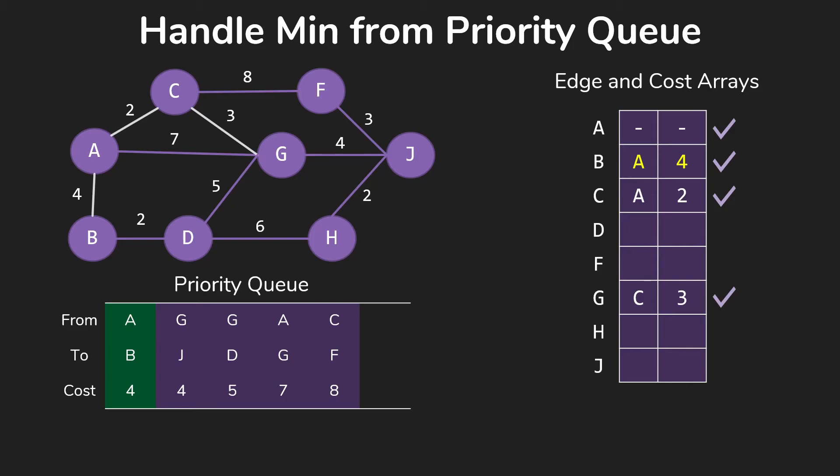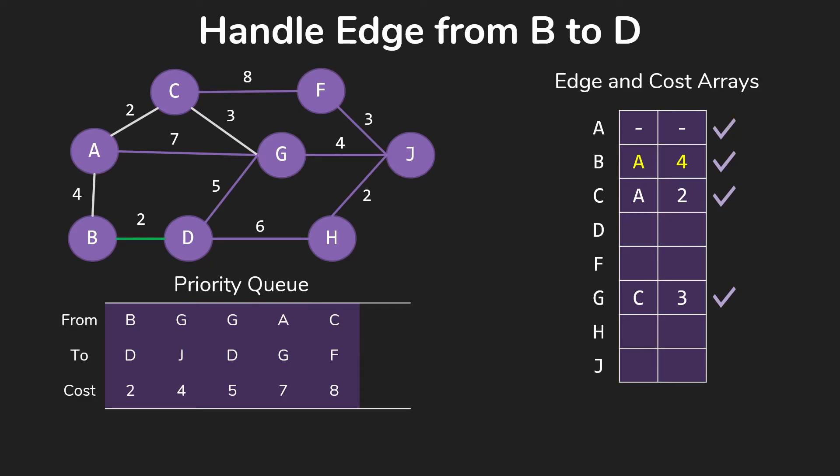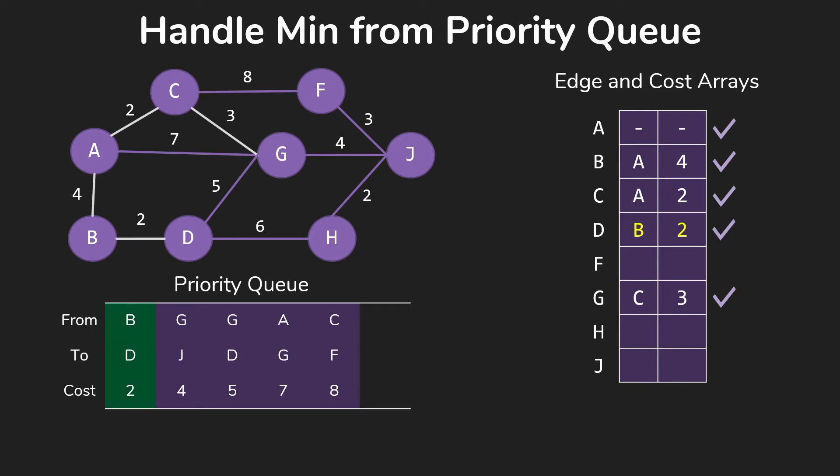So this is going to be AB for 4. So we add that to our tree, start handling edges out of it. We've got two of them. A, of course, we already have in our spanning tree. But D we do not yet have in our spanning tree. So we now add BD, which is now the smallest edge, of course, that we have available to us.